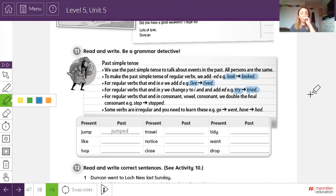Luego dice, for regular verbs that end in consonant vowel consonant, we double the final consonant. Example, stop, queda stopped. ¿Qué quiere decir esto? Cuando tengas un verbo regular que termina en consonante, vocal, consonante, repetimos la última consonante. Por ejemplo, stop, termina en consonante, vocal, consonante, consonante T, vocal O, consonante P. Por lo tanto, repetimos la letra P, queda stopped.